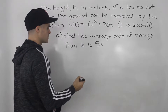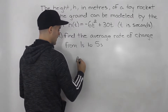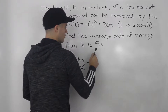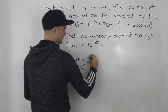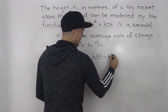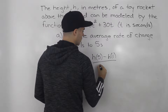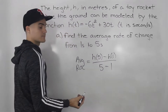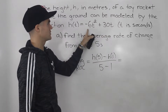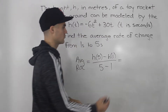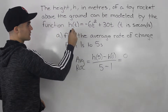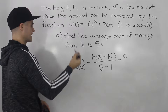Starting off with the average rate of change from one second to five seconds. We have to find h(5) minus h(1), all over five minus one. Now h(5) — if we plug in five for t — we actually end up getting zero for h. So what that means is that the rocket hits the ground at t equals five.